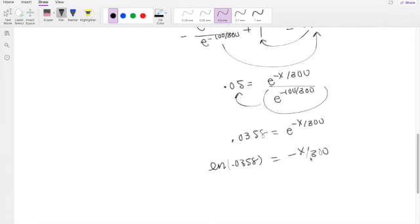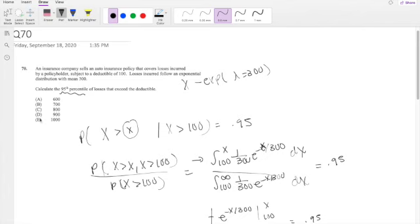Bring that negative 300 onto this side, you get x equals negative 300 times the natural log of 0.0358, which equals 998.71, approximately equal to 1000, which is our answer E.